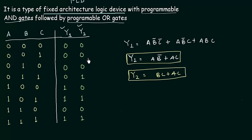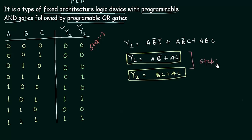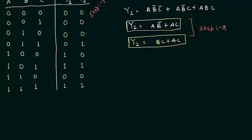Let me write down the steps as we go. Step 1 is the truth table, and finding the minimal SOP form is step 2. Now let's move towards step 3.